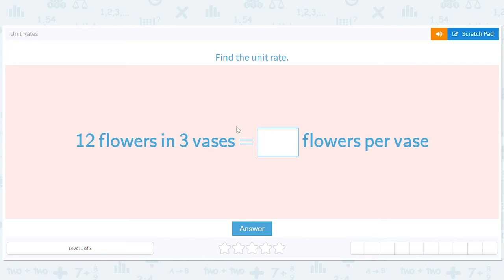Unit rates - find the unit rate. This is fun, we're basically just doing simple conversions that you might see in everyday life. So you have 12 flowers in 3 vases, how many flowers per vase? Well...